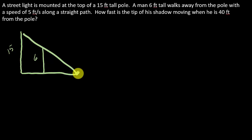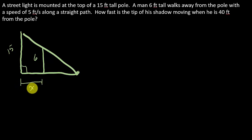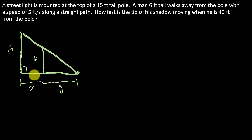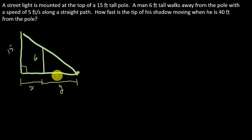So first thing we need to do is label. We know this is a right angle. The distance from here to here we'll call X — you can call it whatever you want. And the distance from here to here, that would be Y. So X is the distance the man is away from the street light, and Y is the length of the shadow.